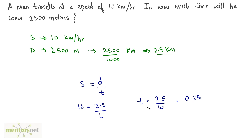What will be the unit of time? Since speed was in kilometers per hour, the time will be in hours. So 0.25 hours is the time taken to cover 2500 meters.